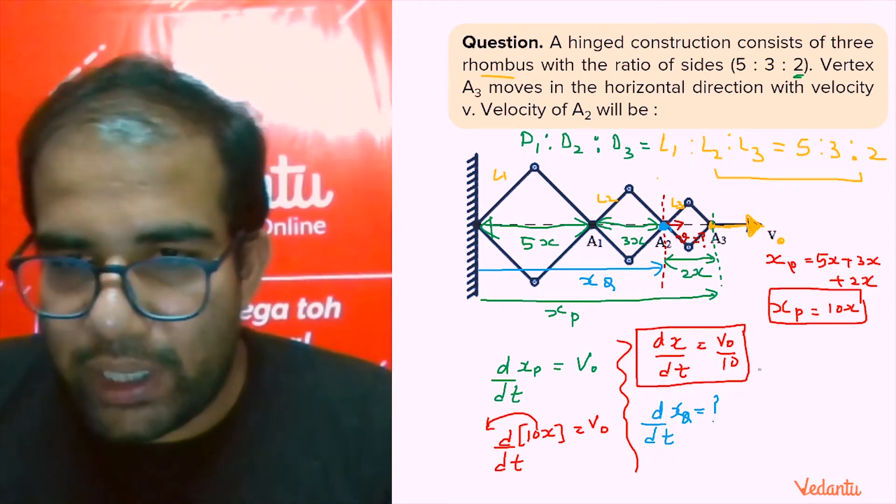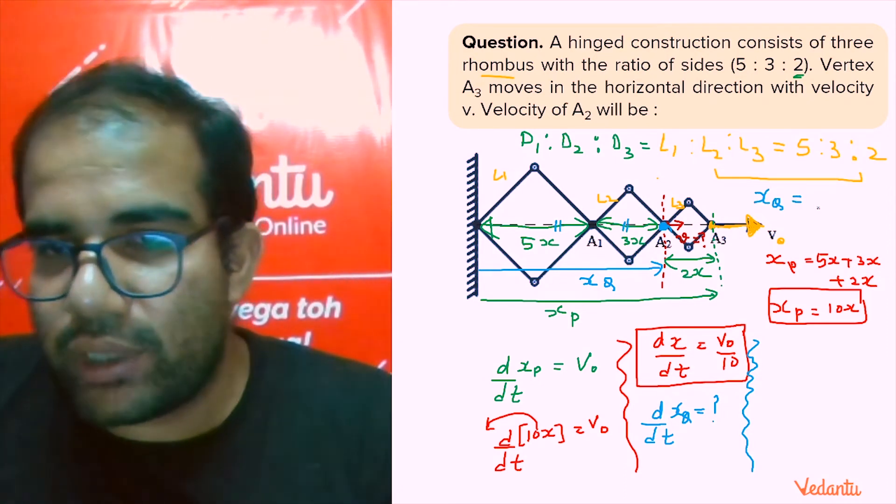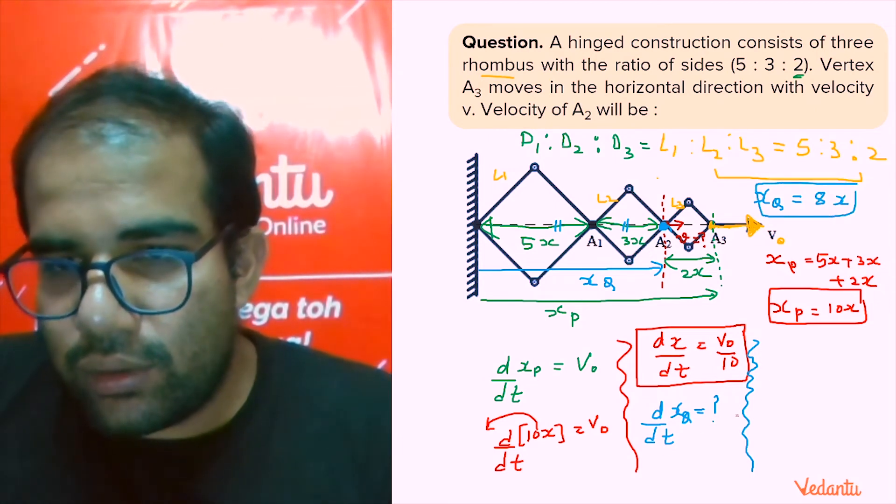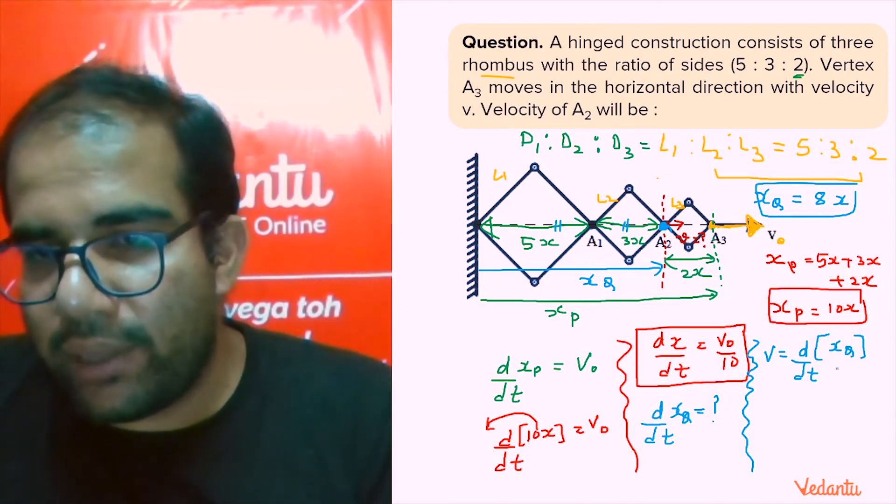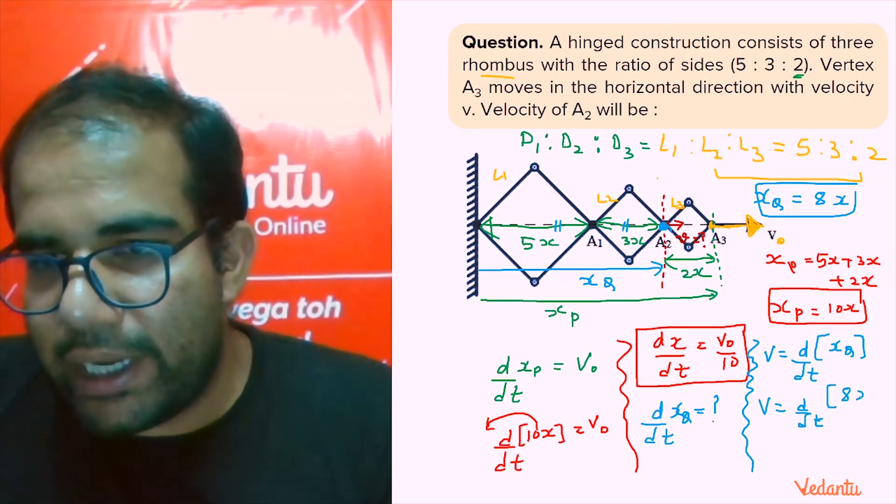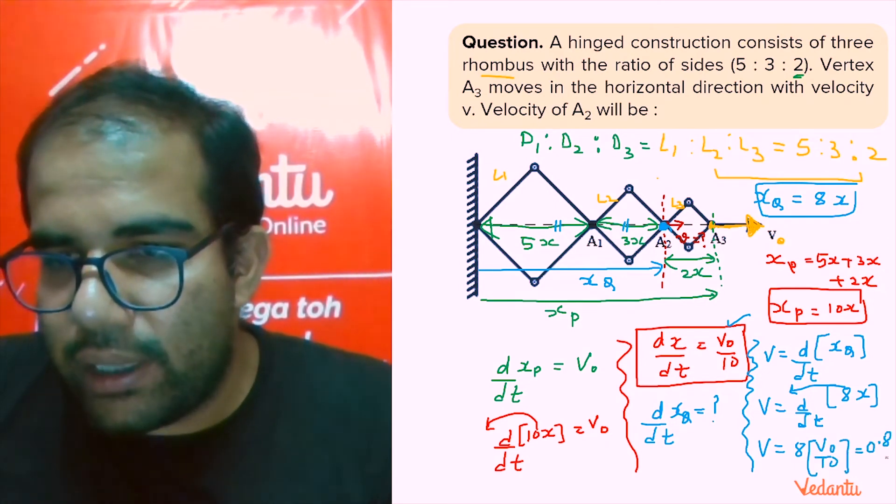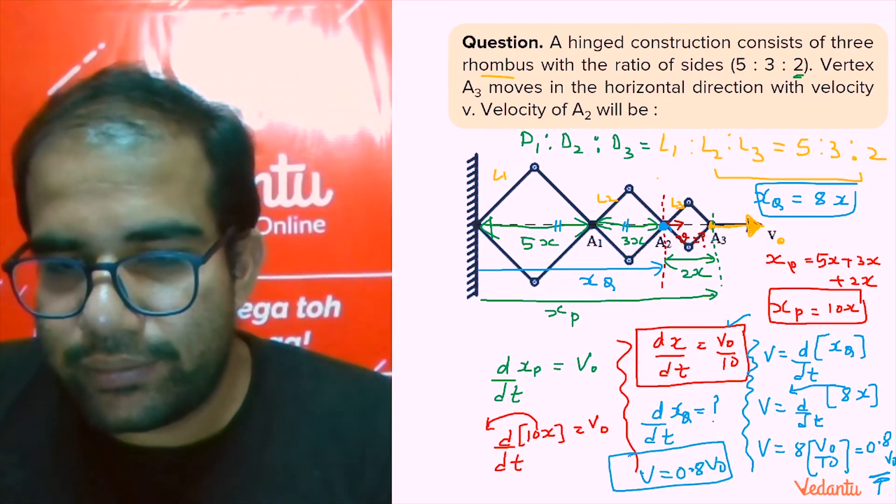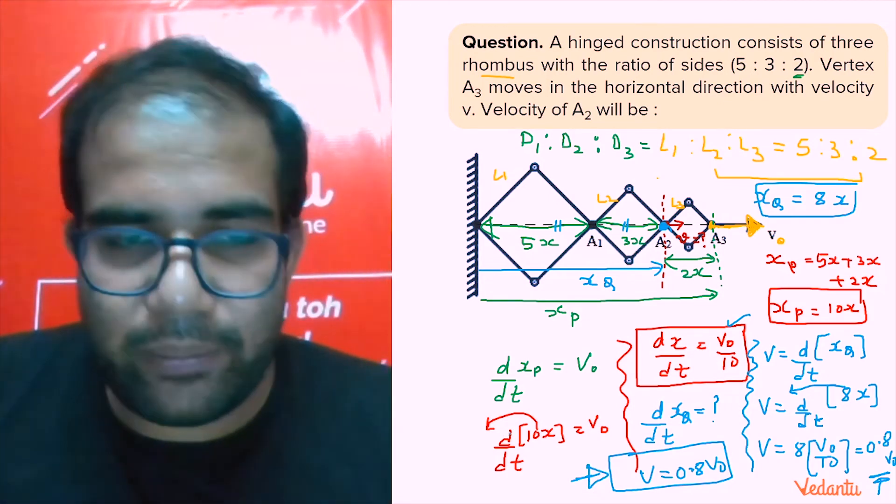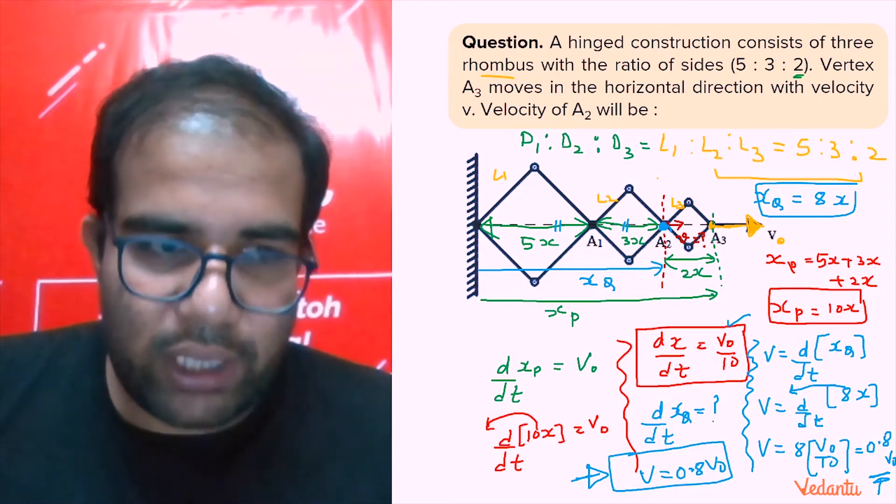We need to find the velocity of this point, let's say this is point Q and this length is xq. I wanted to find d by dt of xq. What is xq? 5x and 3x, so that is equal to 8x. The velocity v is d by dt of xq. xq is 8x, now 8 comes outside and what is dx by dt? The dx by dt is v naught by 10, so 8 into v naught by 10 that is 0.8 v naught is the answer. So the velocity is 0.8 v naught.